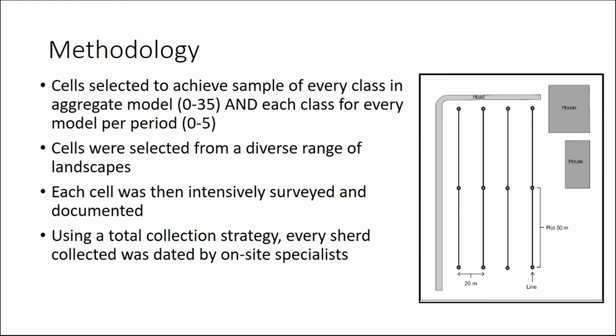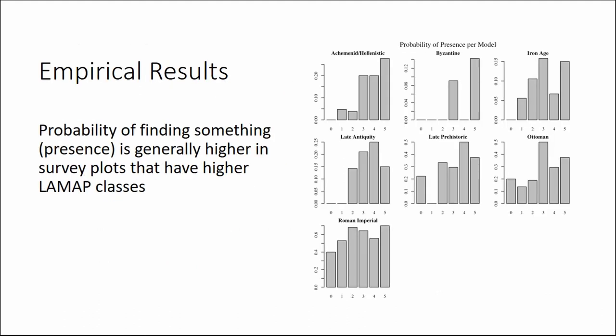Some preliminary results: the bar graph shows the ratio of positive plots to the total number of plots for each LAMAP class for each time period. The height of each bar is effectively the empirical probability of finding something given a LAMAP class. Since the ratios are higher for high LAMAP classes, we can conclude that the predictive model is generally working across all time periods, though some periods appear to work better than others.